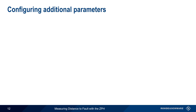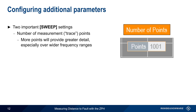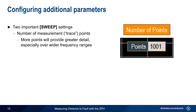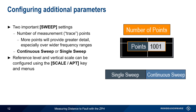There are a few additional parameters that can be configured. The Sweep hard key brings up two important settings: the number of measurement or trace points — more points provides greater detail, especially over wide frequency ranges — and toggling between the default continuous sweep and single sweep. In addition, the reference level and vertical scale can be configured by pressing the Scale Amplitude hard key and adjusting the related parameters. Note that automatic scaling of these values is also supported.